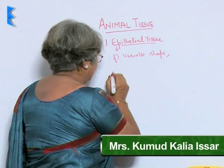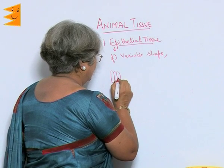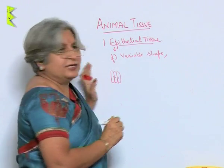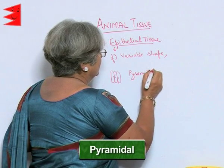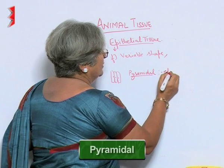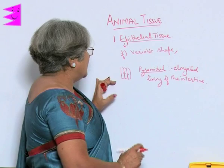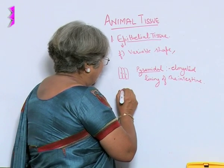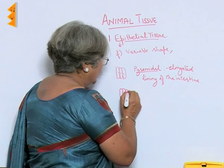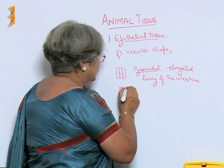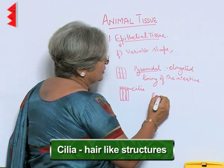Sometimes the cells are not flat but elongated — this epithelial tissue is called columnar or pyramidal epithelium. These cells are found in the intestine. Sometimes these cells have tiny hair-like structures called cilia, as in the case of the respiratory tract.